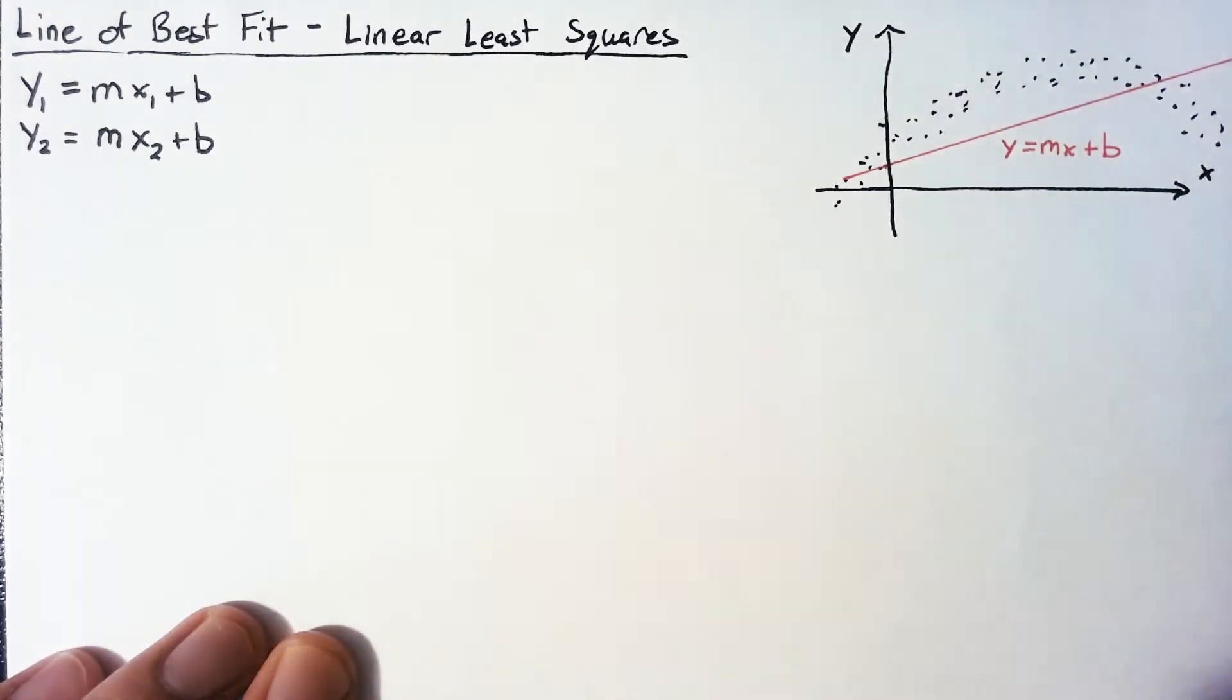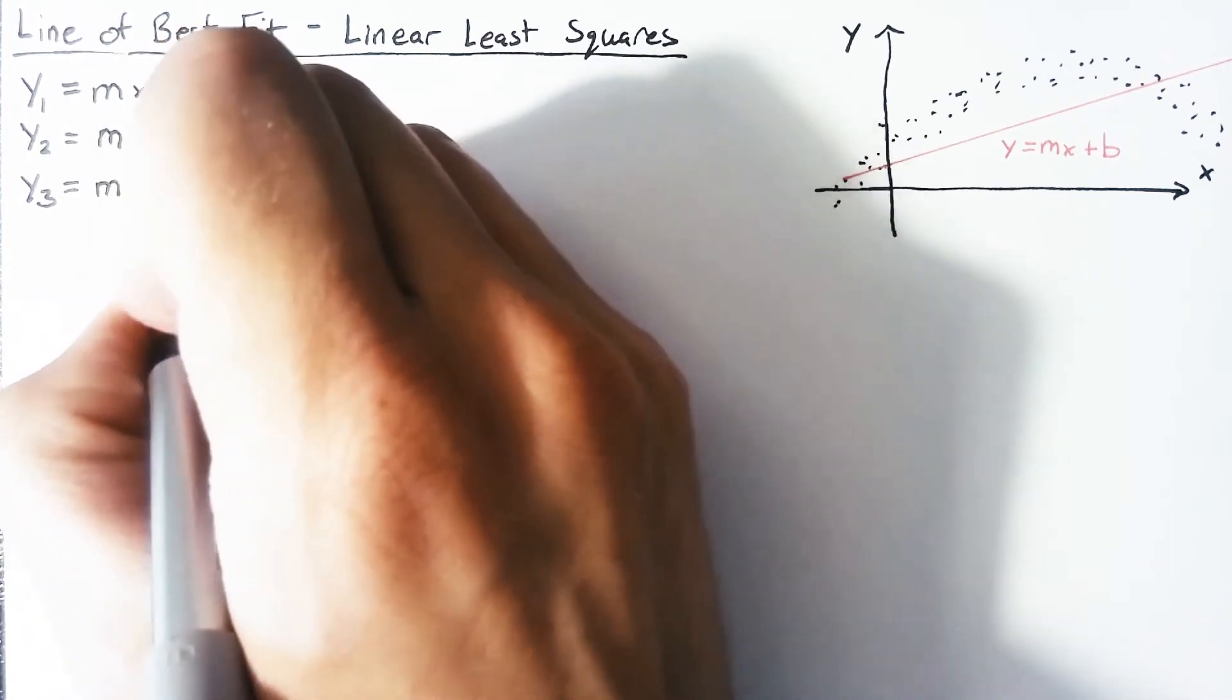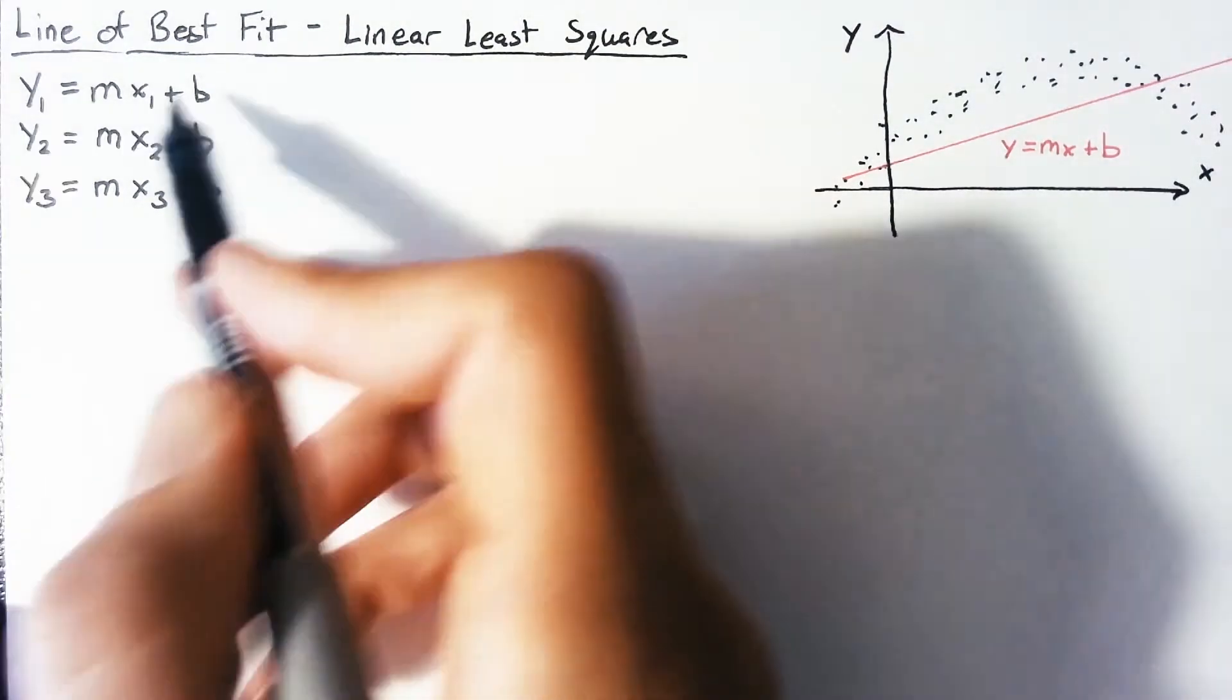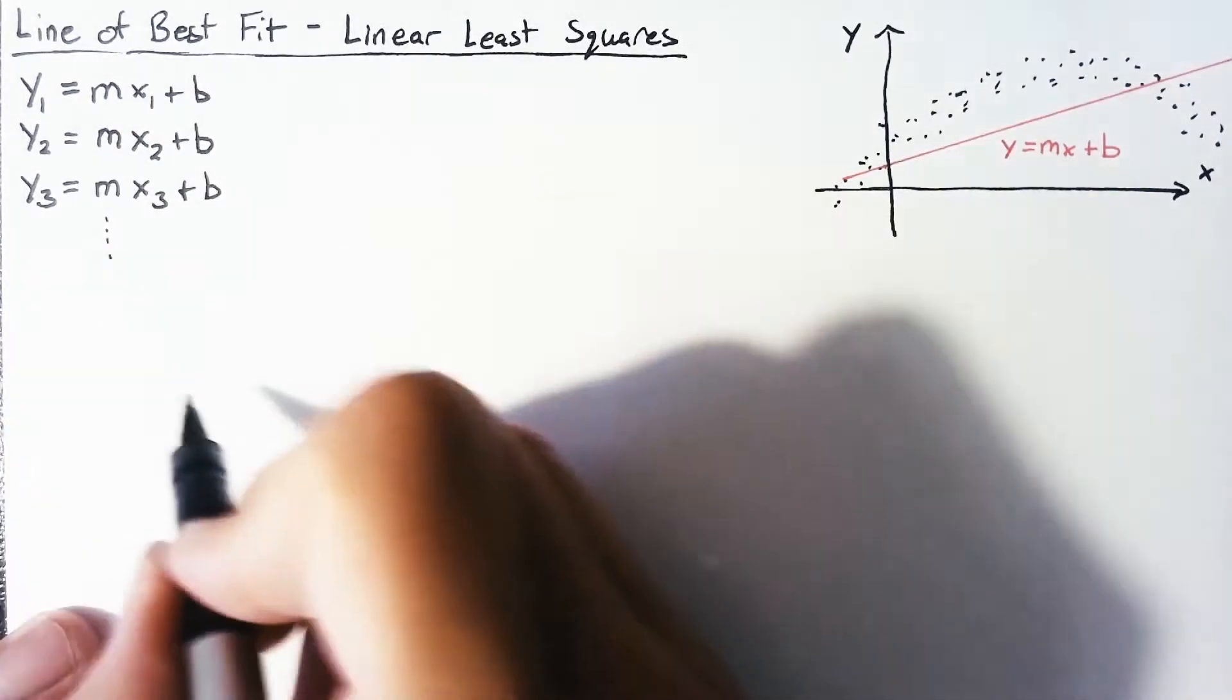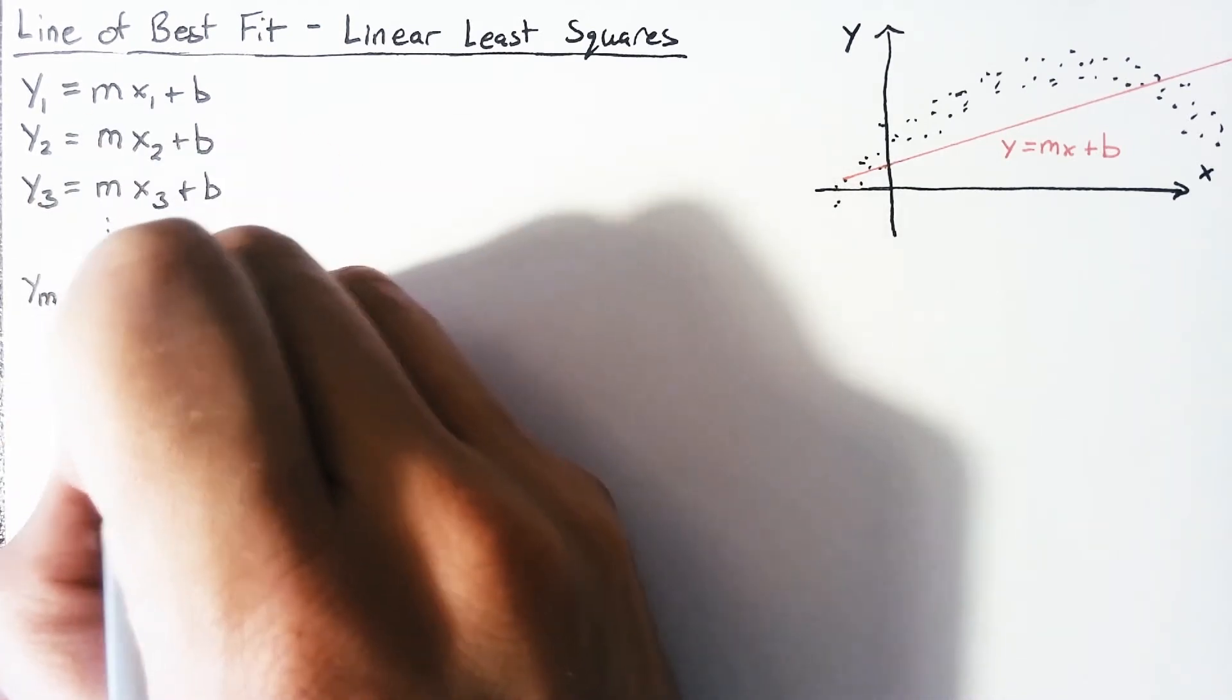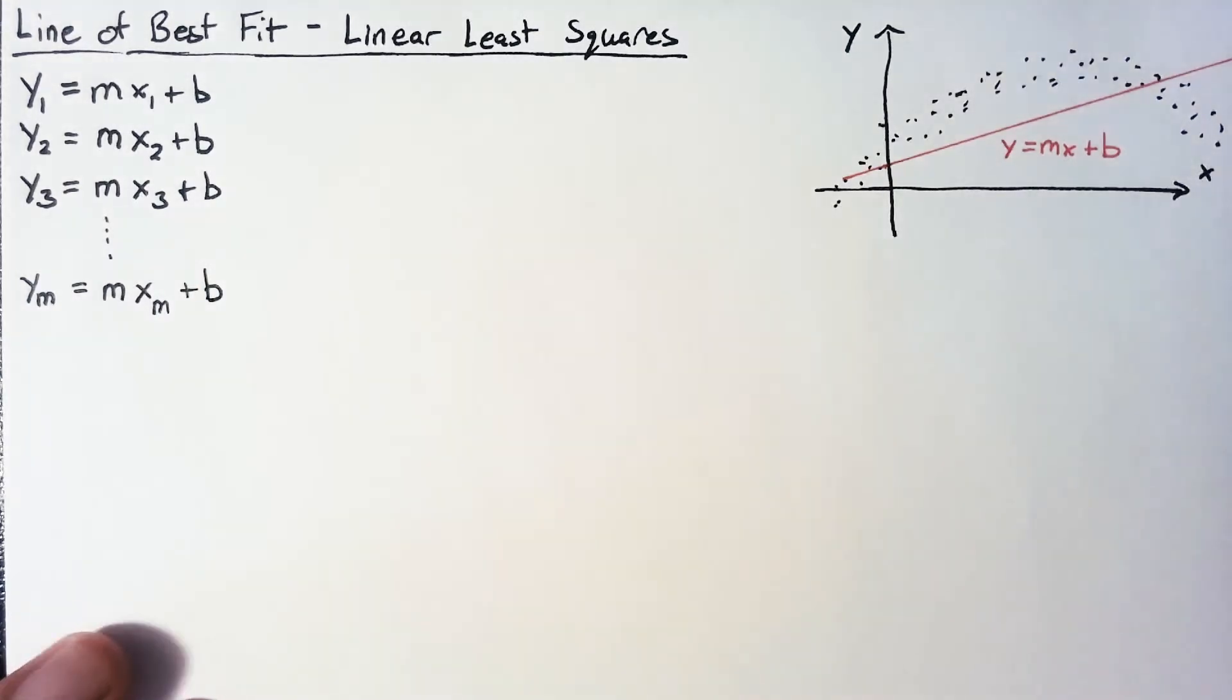But we still have more data points. So once we hit y3, we start to be in trouble. Because now there's not going to be any value of m or b that actually make this equation work unless we just happen to get very lucky with our data. And of course, this just keeps on going. So I'm going to say that we have m data points. So our last equation will be ym is equal to this m for the slope multiplied by x sub m plus b. And these are all the equations that we're trying to fit.